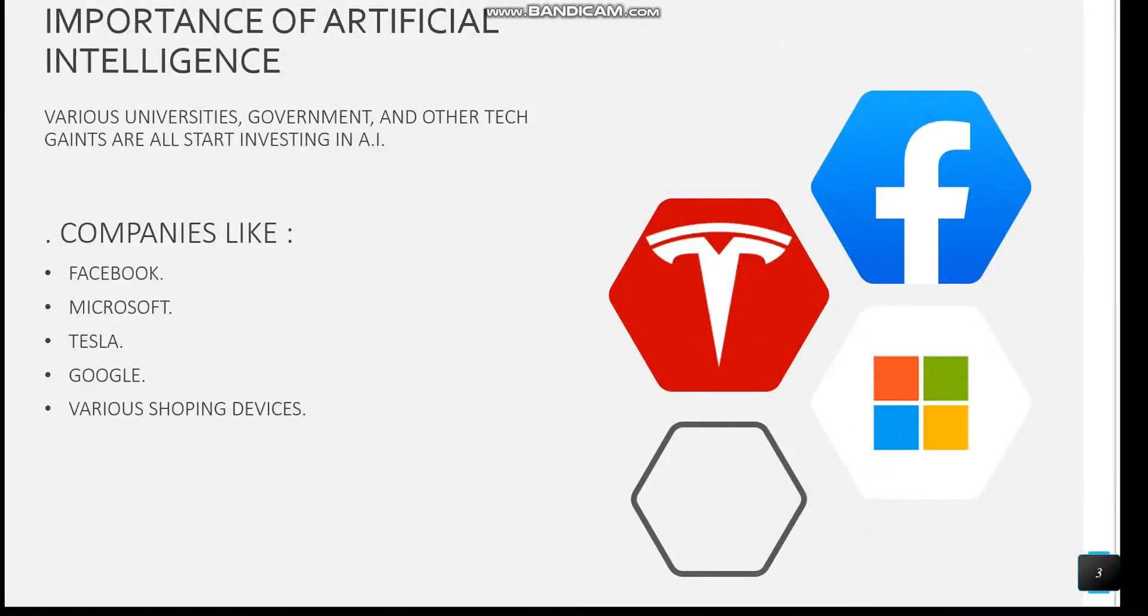The reason behind this question is that various universities, governments, and tech giants are all starting to invest in artificial intelligence. Companies like Facebook, Microsoft, Tesla, Google, and various shopping devices believe that artificial intelligence is the future of the modern world. That's why artificial intelligence gains so much importance nowadays.